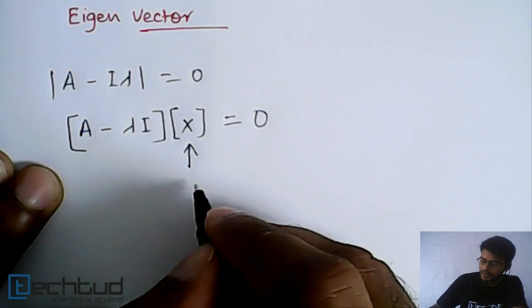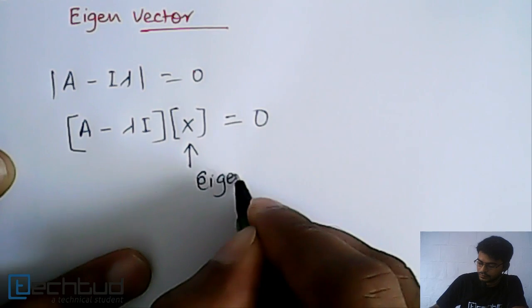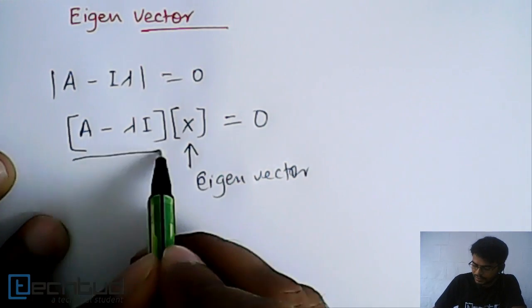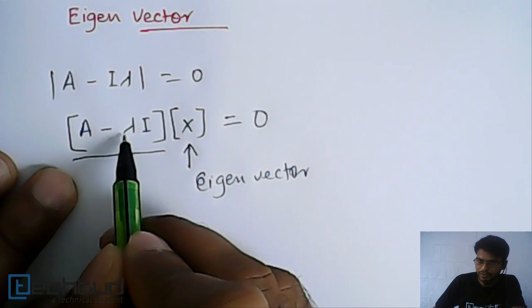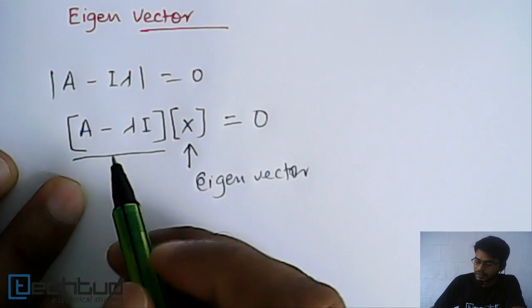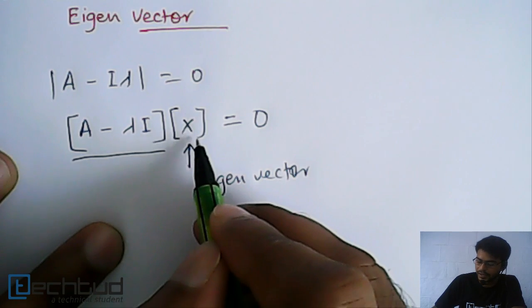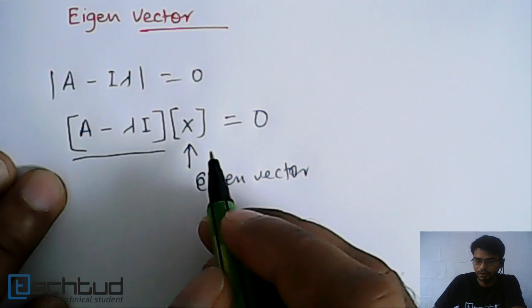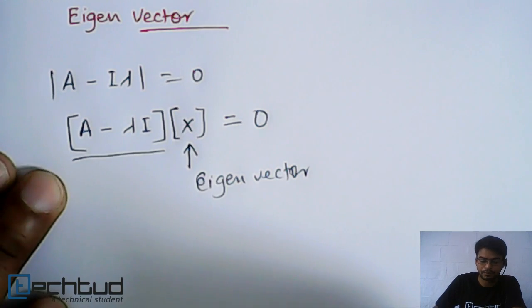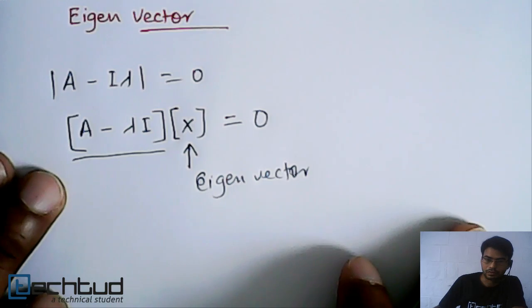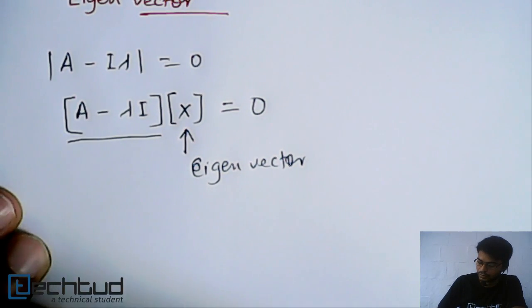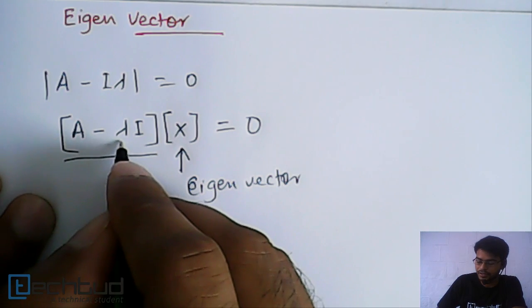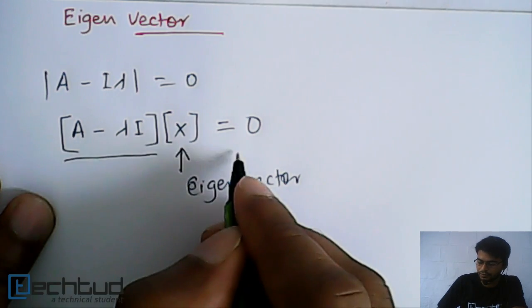As this matrix is known when we have calculated lambda, we multiply this with x and equate it with zero. Whatever value we get for x, this will be eigenvector. Similarly, if we have an n by n matrix with n lambdas, for all n lambdas we will have this kind of equation and we will get n eigenvectors.